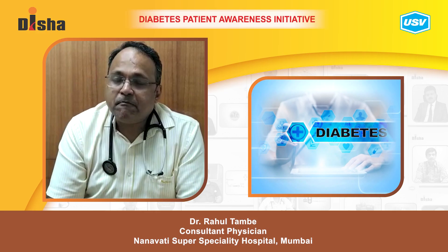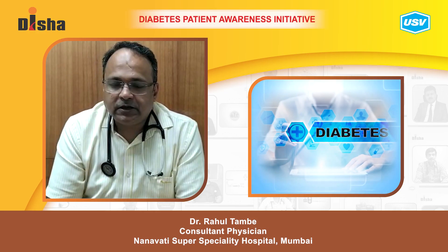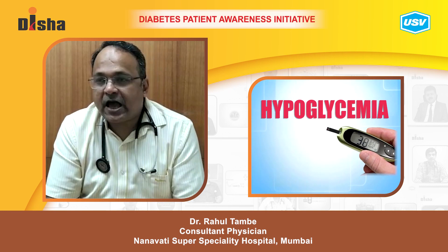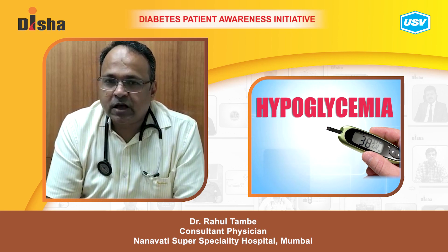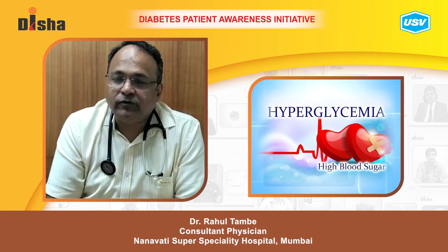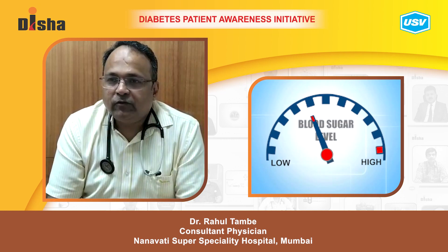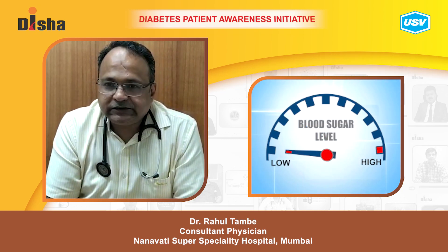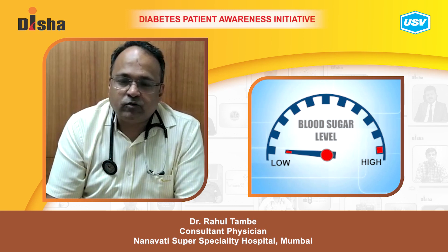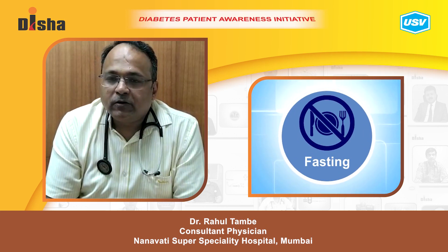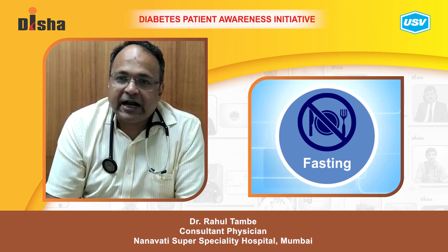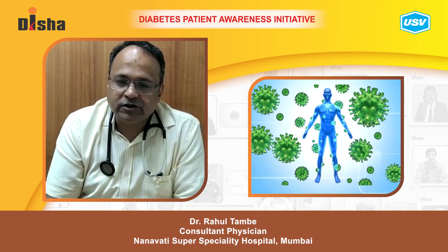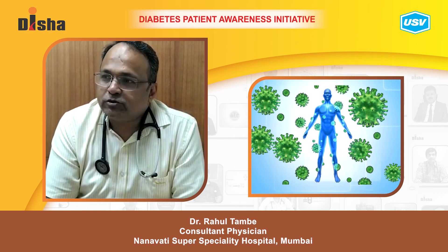Today we are discussing an important part of diabetic therapy: diabetic emergencies. Diabetic emergencies are of two types — hypoglycemia, or low sugars, and hyperglycemia, when we have too much sugar in our body. We will focus on hypoglycemia first. Low sugar levels occur when a diabetic patient on regular medications has not taken adequate meals, or has a fever, infection, vomiting, or loose motion, causing blood sugar to fall.